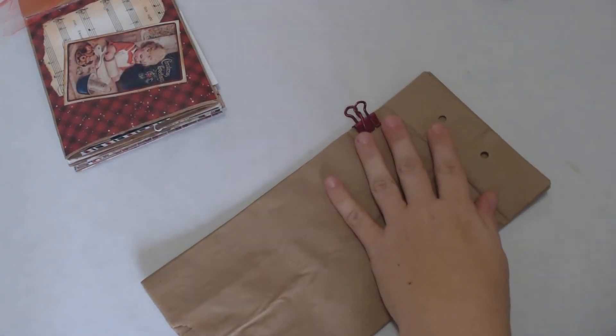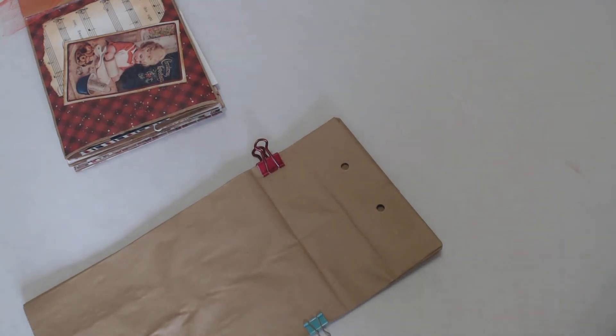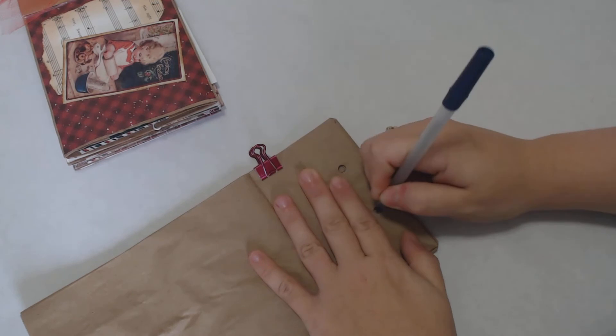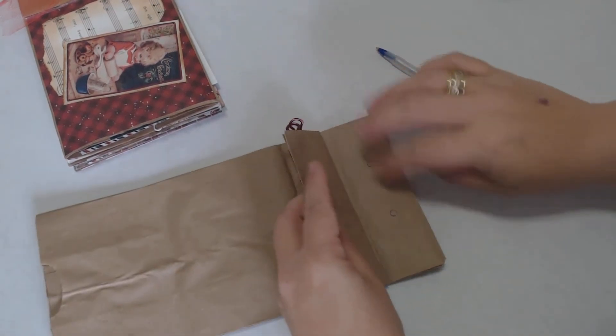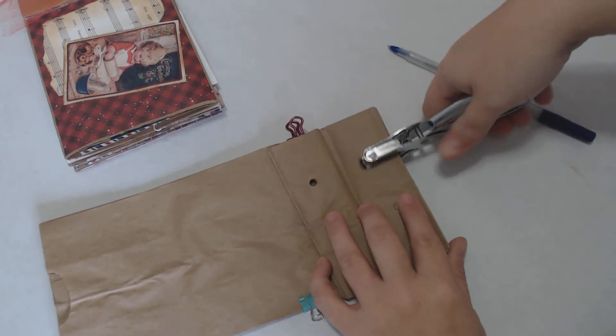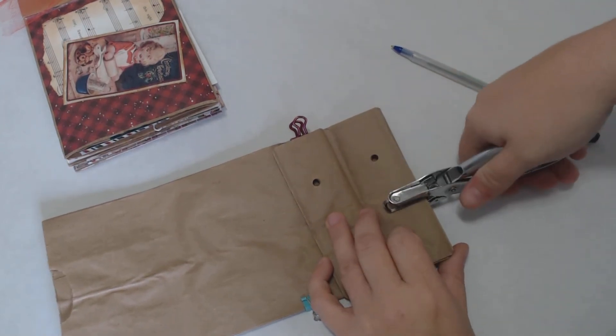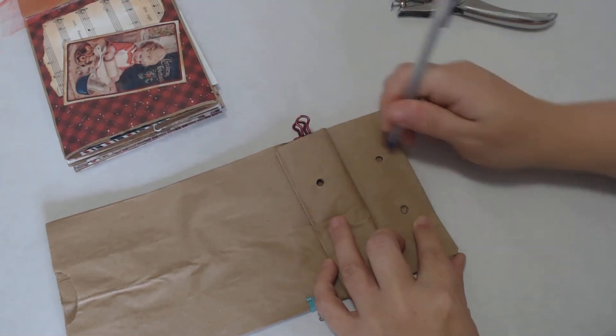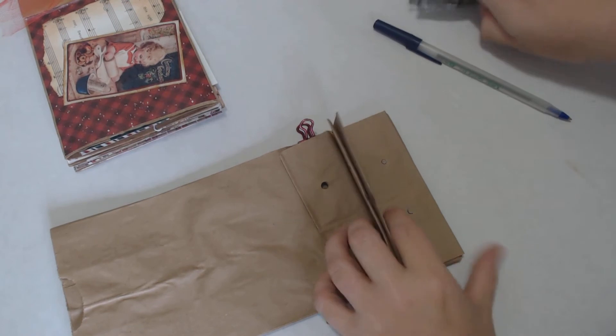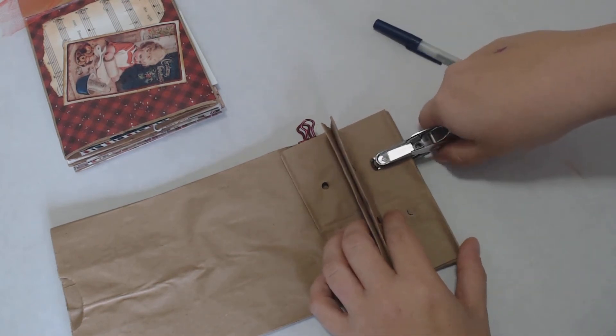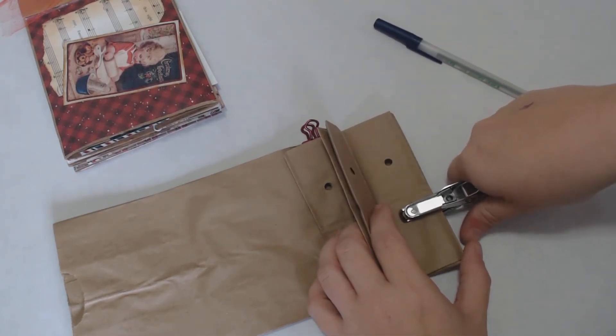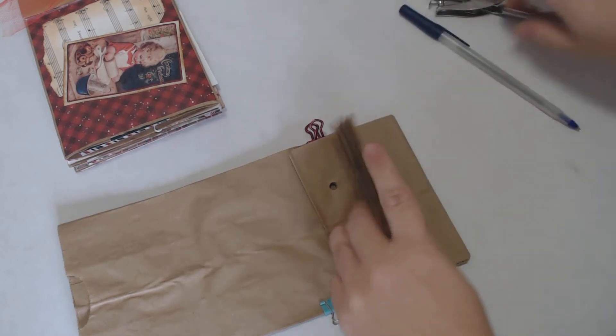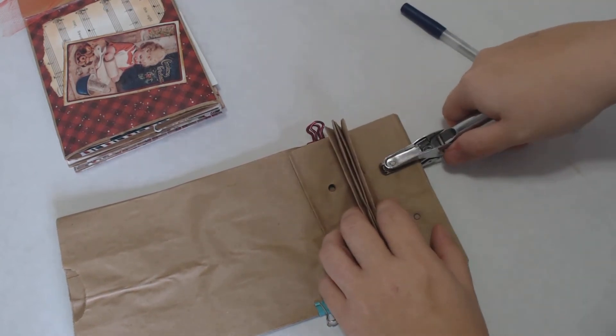That's where my first hole is. If you have a heavier duty punch, I know some of you do, like the Crop-A-Dile or whatever those are, you can probably punch through all of these. I just have this basic punch, so this is what I'll be using. I'm just going ahead and punching through, lining it up. This is a project that anybody can do. You don't need a lot of supplies. You just need paper, four lunch bags, a hole punch, and a pair of scissors. That's it.